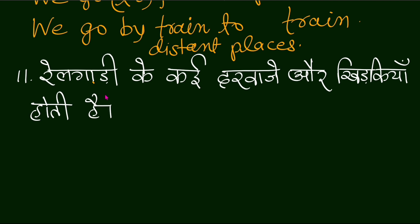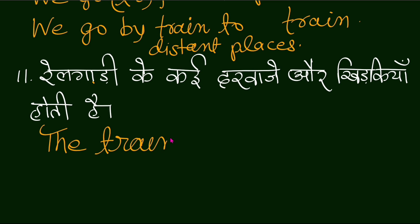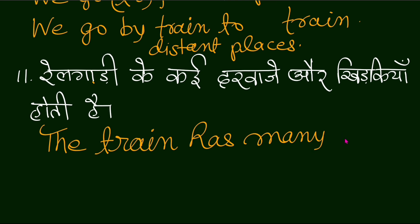Rail gaadi ke kai darwaaze aur khidkiyaan hoti hain. So we write: 'The train has many doors and windows.'